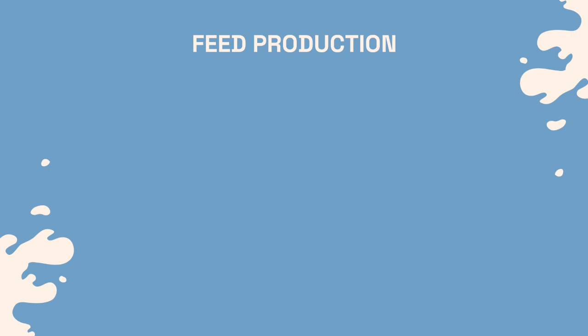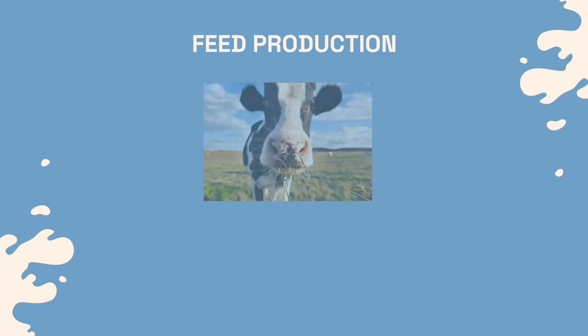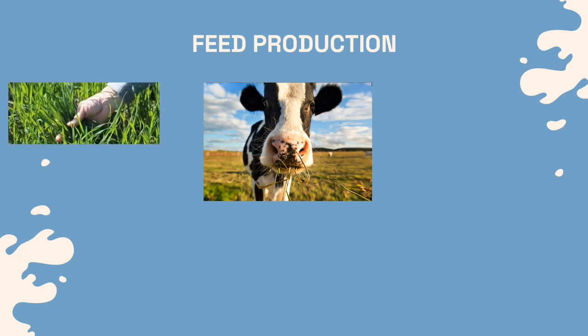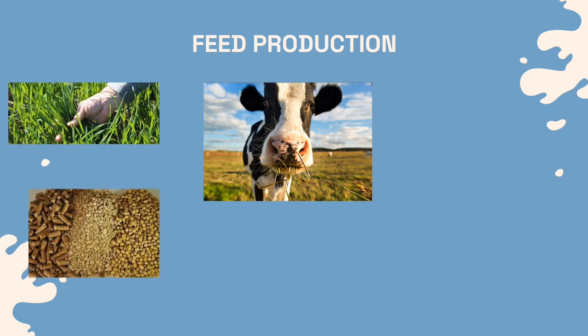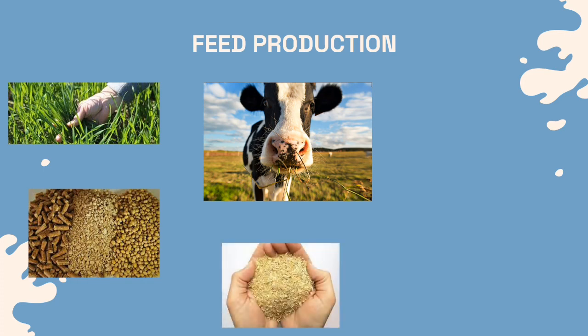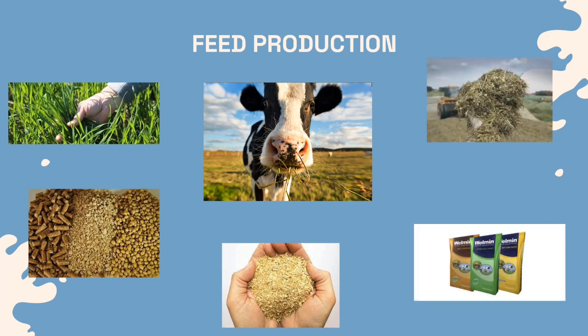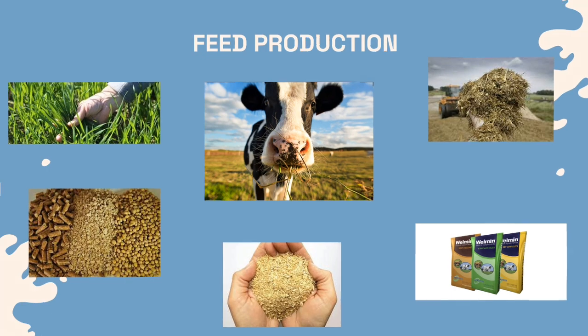A cow has to have a variety of feed components to ensure she remains healthy and can produce a strong calf and top-quality milk. Her rations need to be adjusted according to her age and the stage of her breeding or milking cycle. Dairy cows often eat as much as 46 kilograms of rations a day, made up of a balanced combination of forage, grain, mineral supplements, and protein-rich feeds such as soybean meal. Forage is the basis for a cow's diet, including pasture grass in the spring and summer months, or chopped grass or silage.